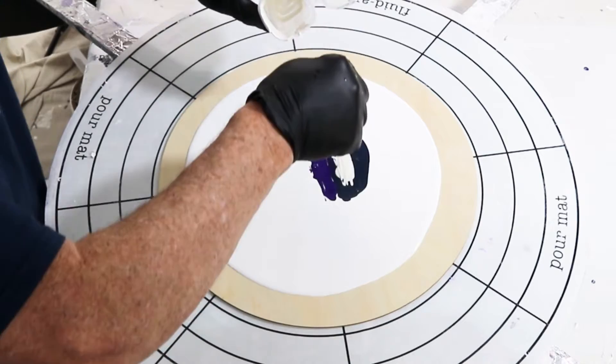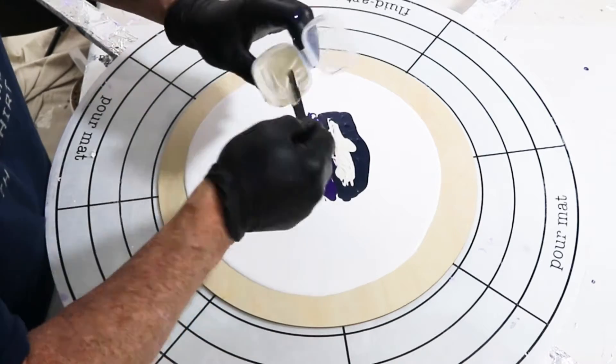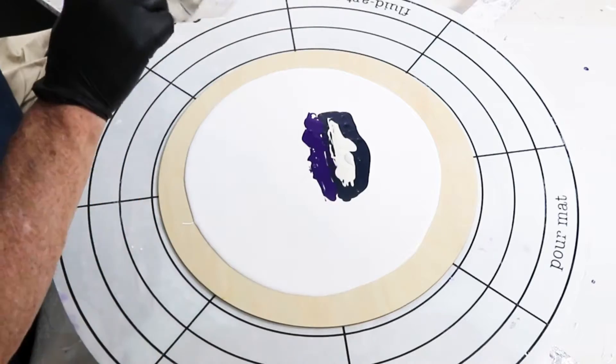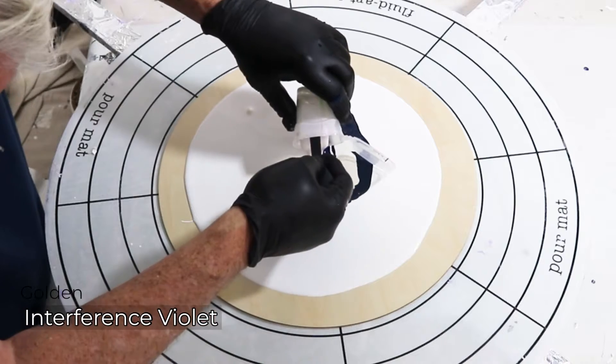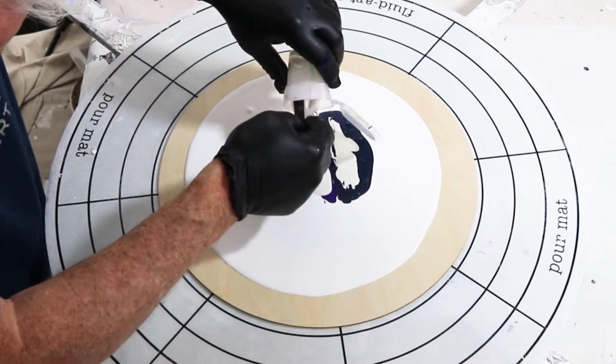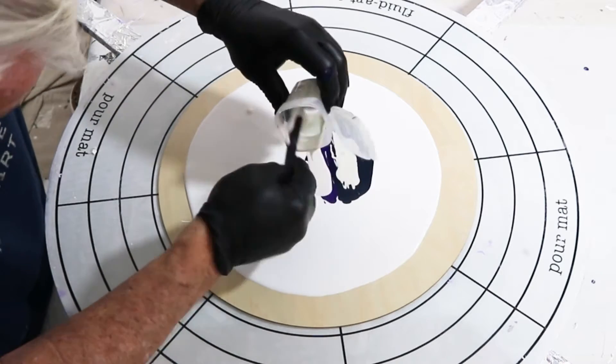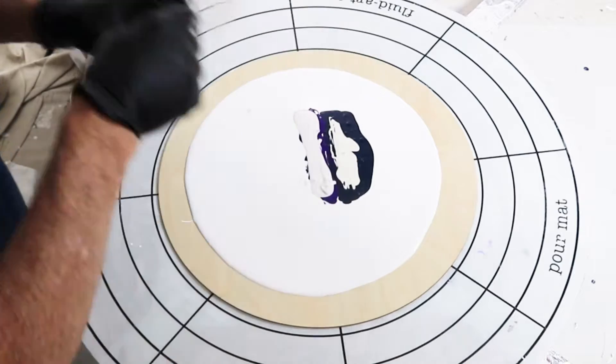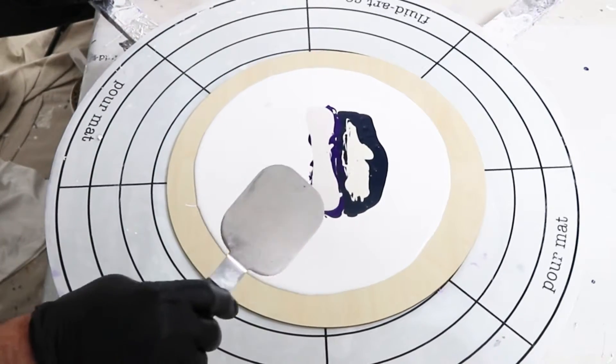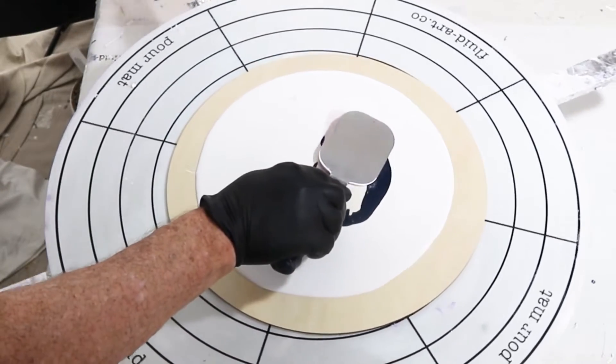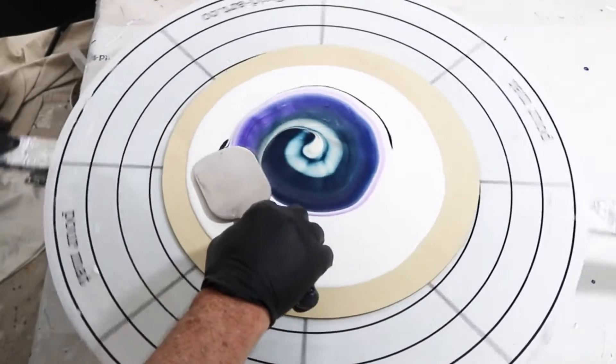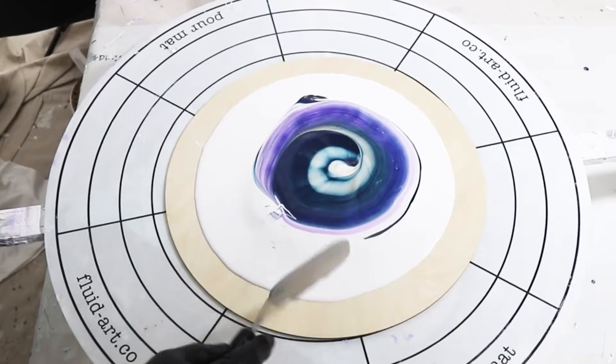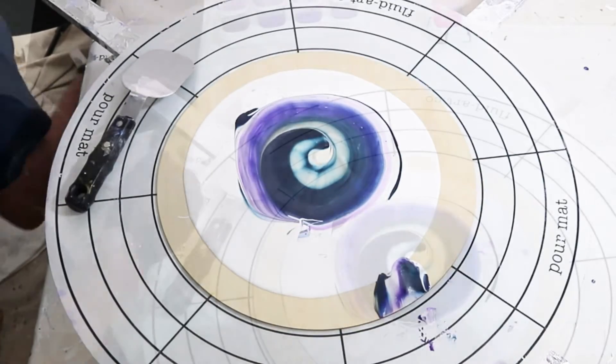My interference colors start out as a pigment. Next is interference violet, again by Golden, just finishing off what I have. I'm going to swipe through the interference colors into the dark. To get my first spiral going, I'll load up the back of this swiping tool.